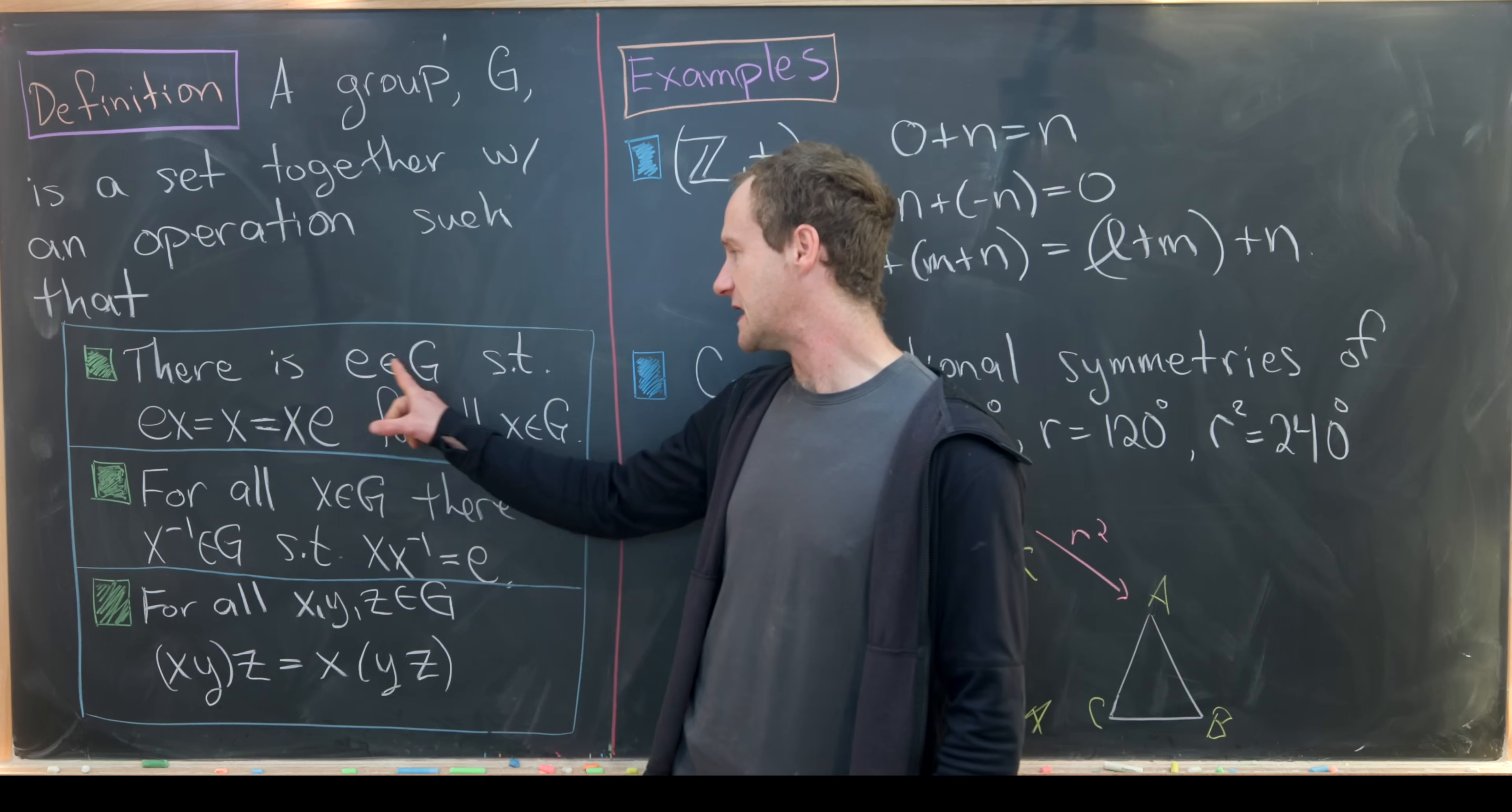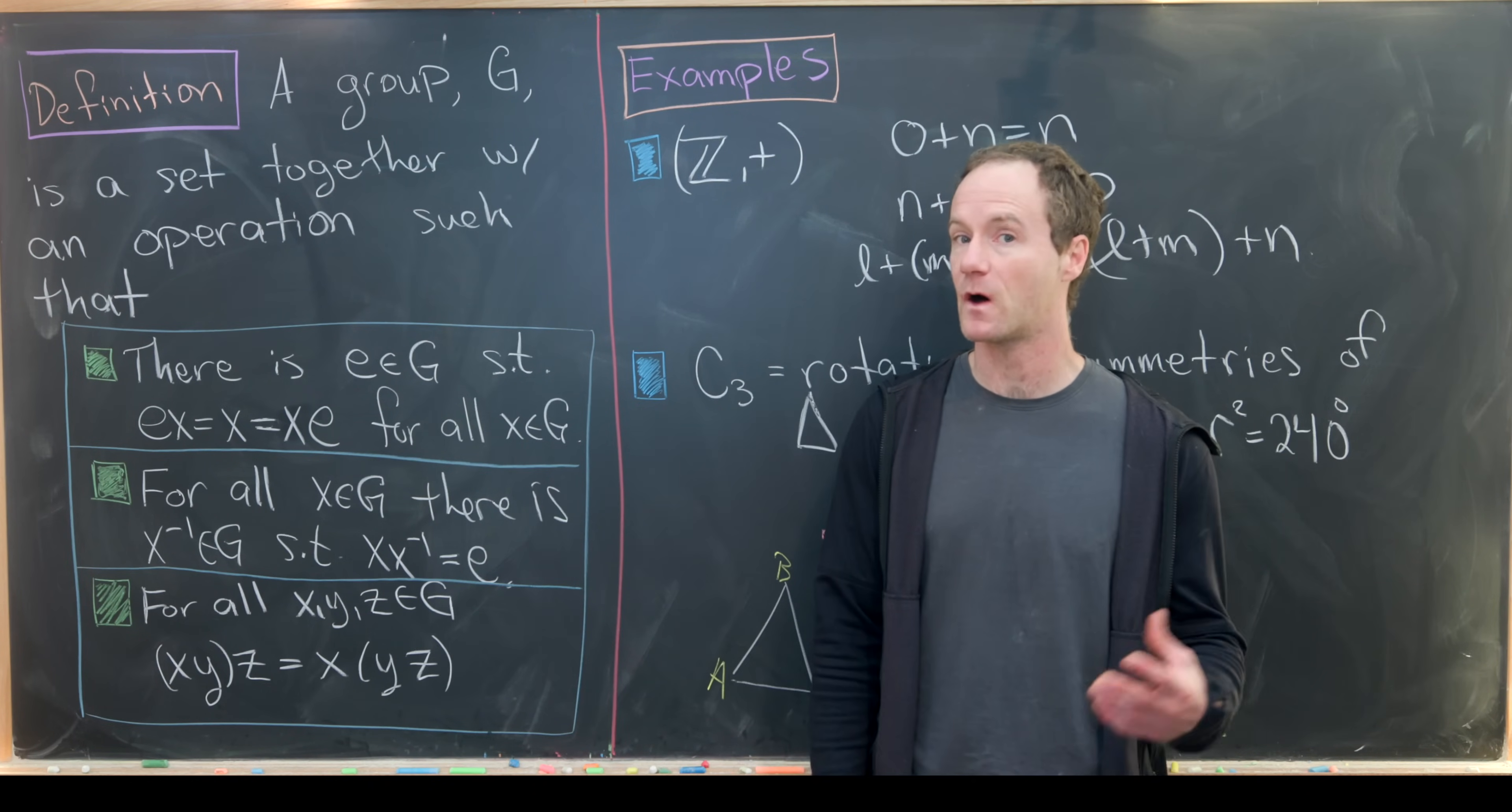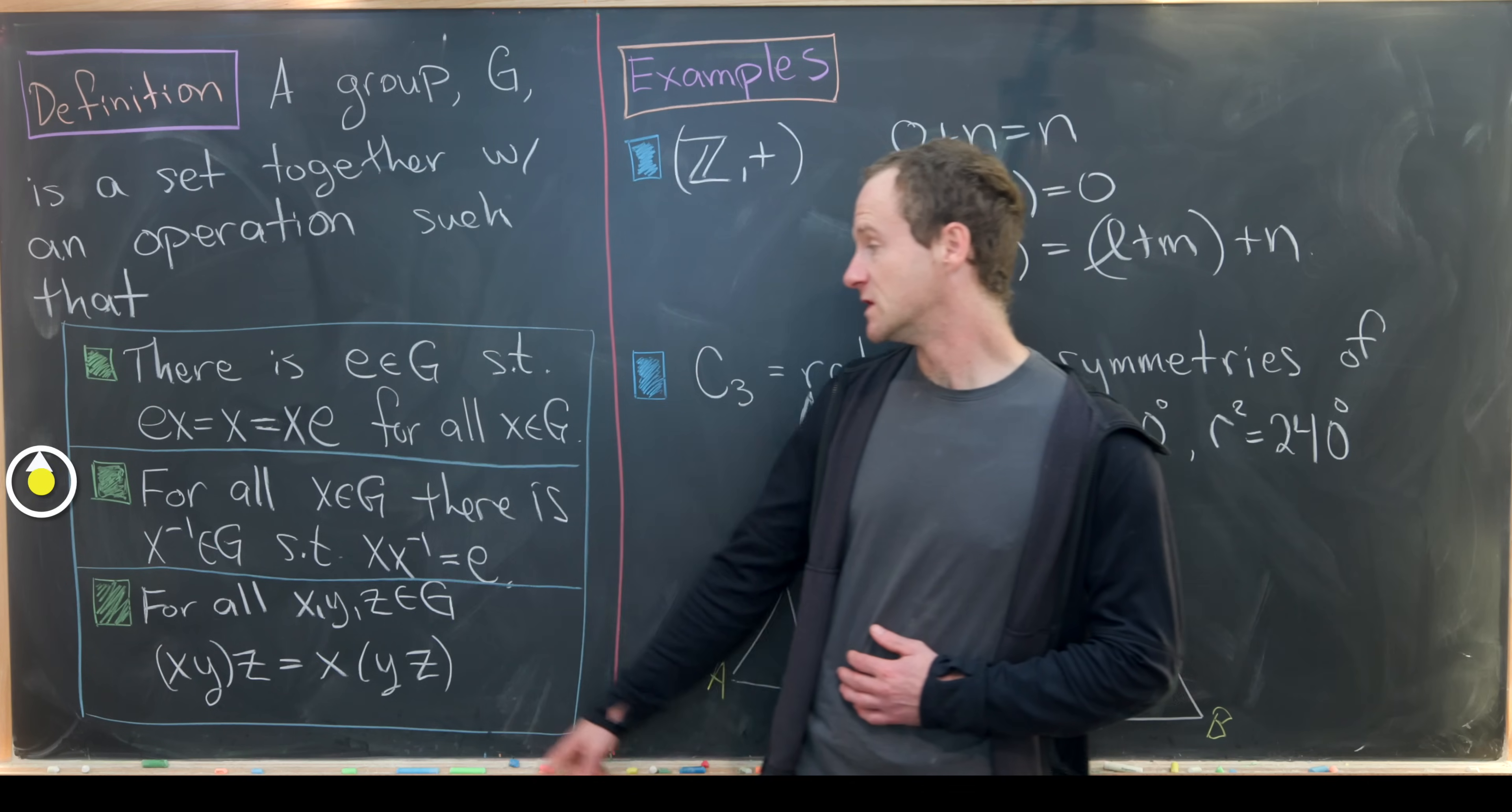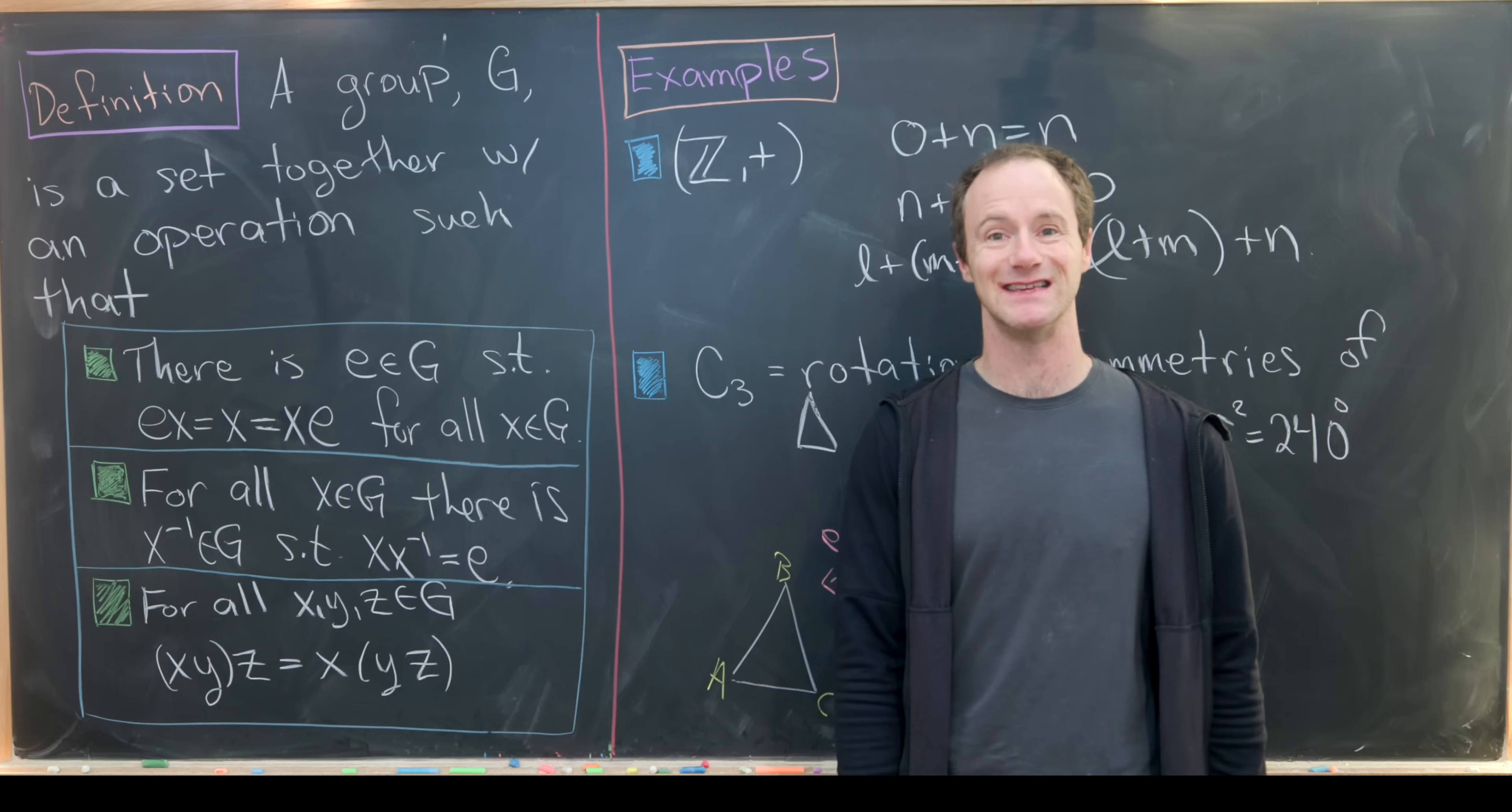That operation is written as multiplication, although it's not always multiplication. Our next axiom is that there are inverses to all of our elements. So every X in G has another element paired with it, which we'll call X inverse, so that when you combine them, you get back to the identity.